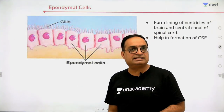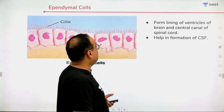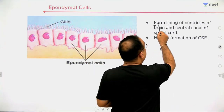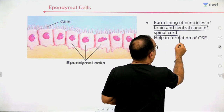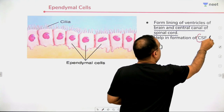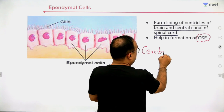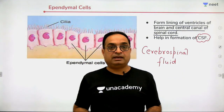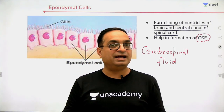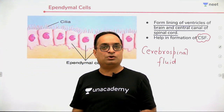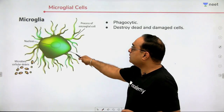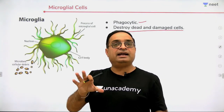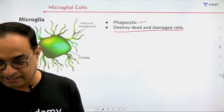Ependymal cells are another type of neuroglial cell. They have both microvilli and cilia. They form the lining of ventricles of the brain and the central canal of the spinal cord, and they help in the formation of CSF — cerebrospinal fluid. In the nervous system, there is no lymph; cerebrospinal fluid takes its place. Microglial cells are phagocytic — they destroy dead and damaged cells and are called brain macrophages.